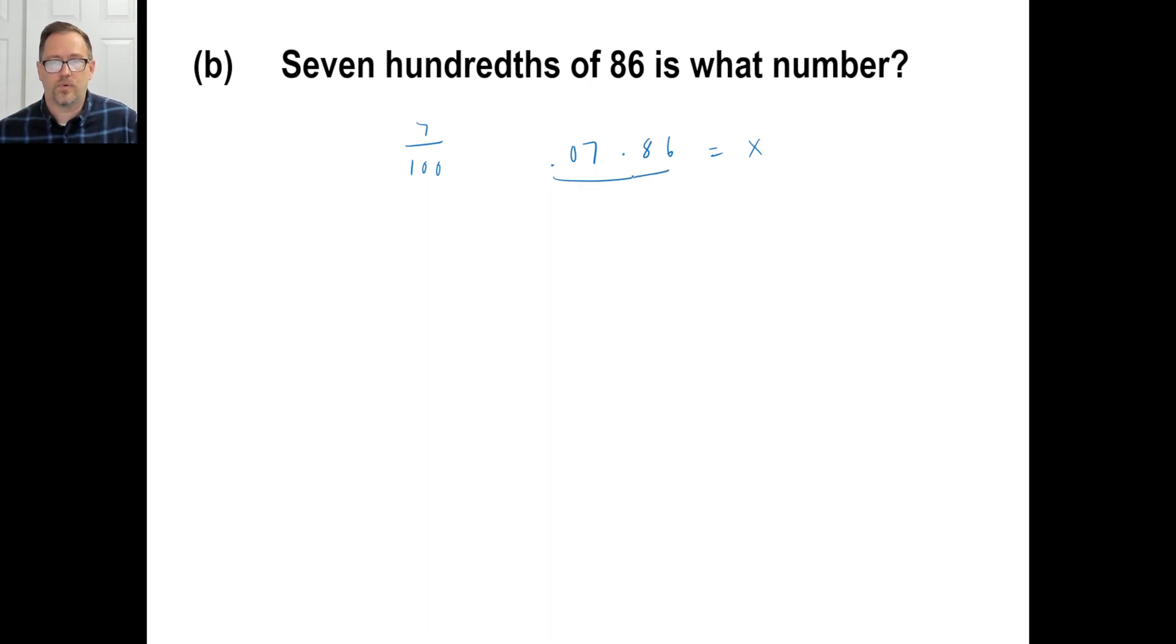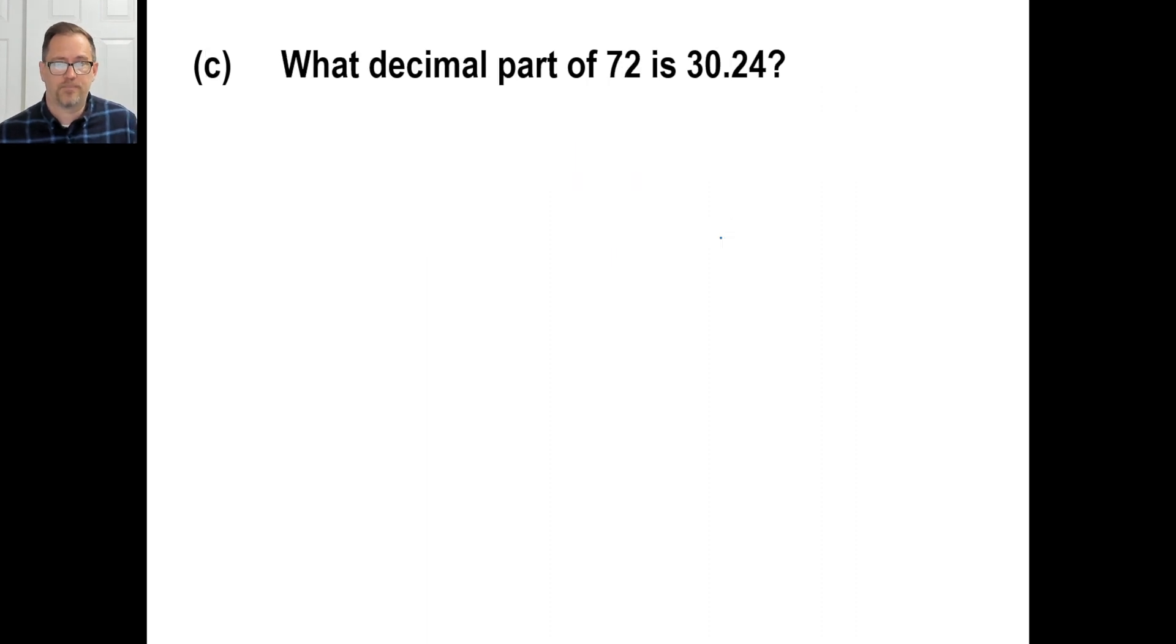I mean, you can do, you know, 0.07 times 86. There we go. Piece of cake. So 0.07 times 86 is 6.02 if you do the arithmetic. And that's X. That's all there is to it. Pause it and try C.